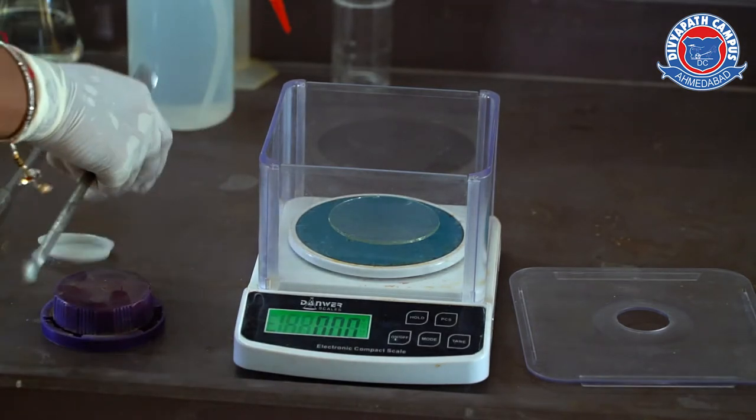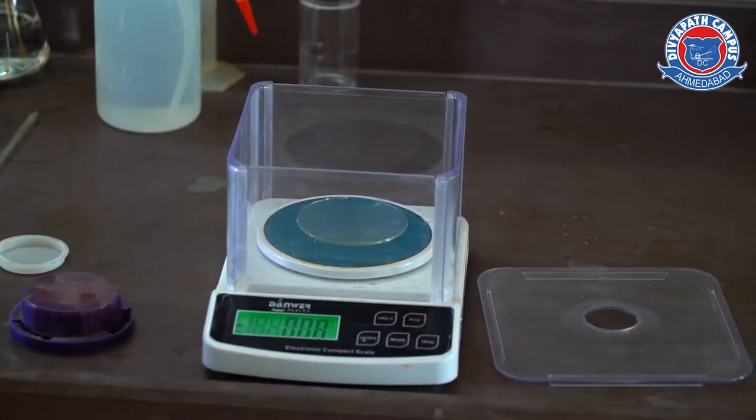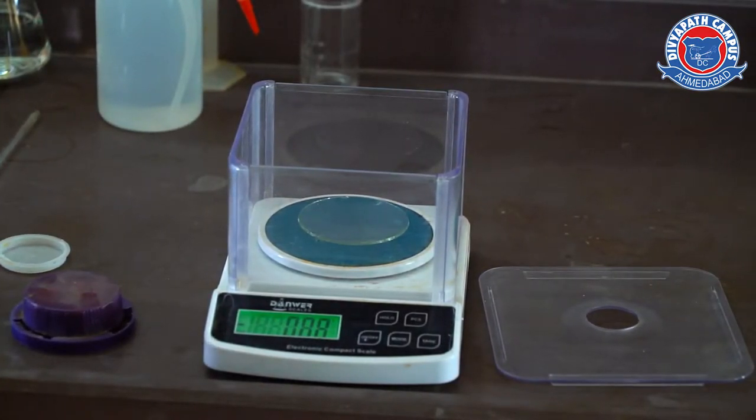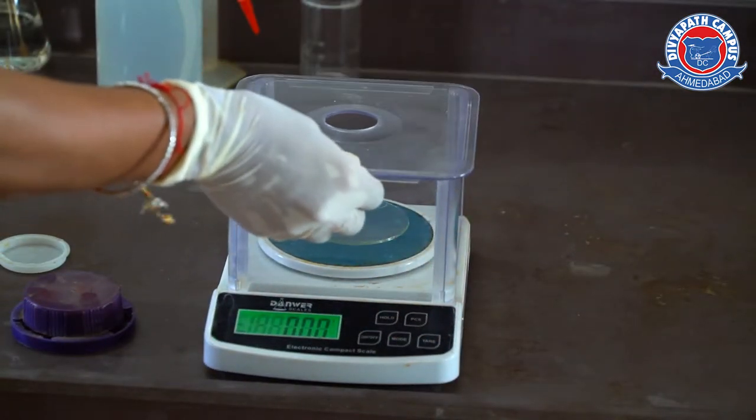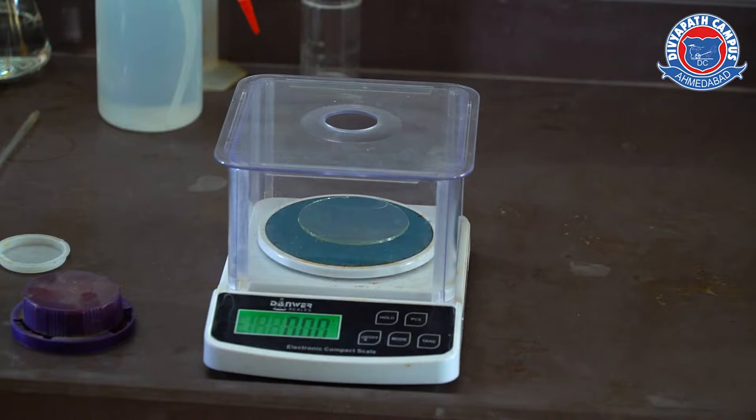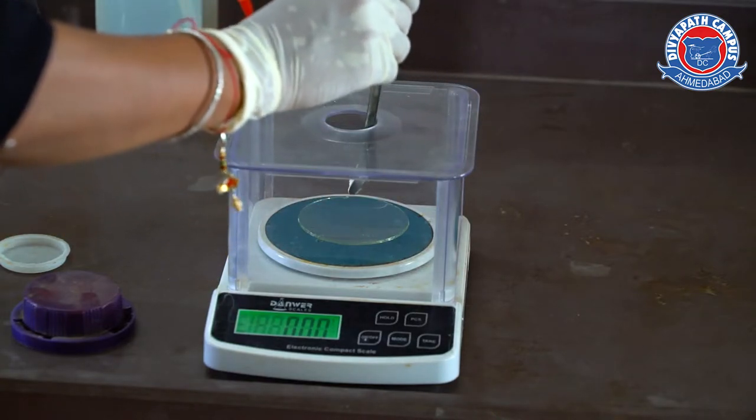In our experiment, there is mentioned we have to take 500 mg starch powder. But the weighing balance is measuring in grams. So, 500 mg means 0.5 gram. So, we will measure 0.5 gram starch powder.